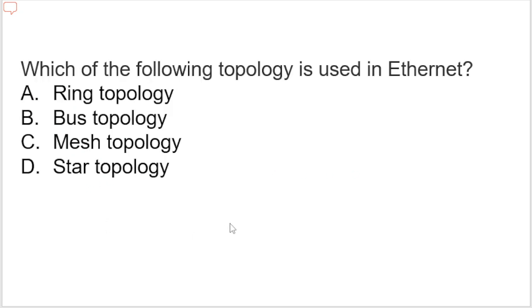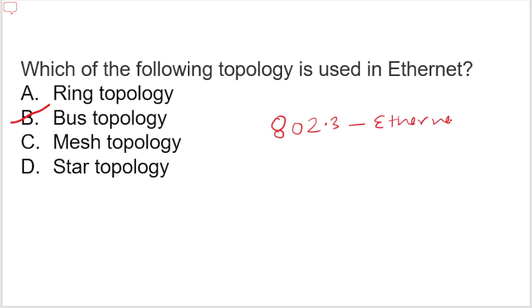Next question: which of the following topology is used in Ethernet? The answer is bus topology. Bus topology is designed such that all stations are connected through a single cable known as backbone cable. Bus topology is mainly used in 802.3 Ethernet.